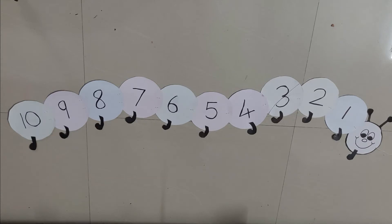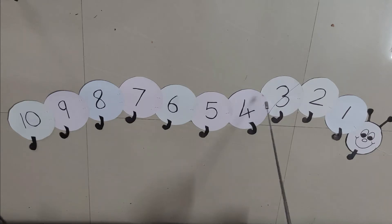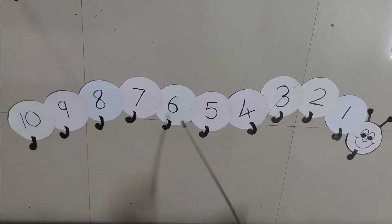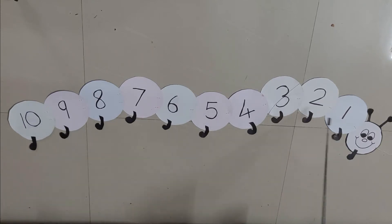Now see this caterpillar — something is written on its body. A caterpillar says: Hi, I am a caterpillar. And these are numbers. Let's count the numbers: 1, 2, 3, 4, 5, 6, 7, 8, 9, 10. This is forward counting. It starts from the smaller number and ends with the bigger number.